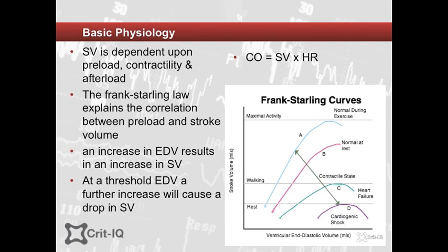This graph shows how an increase in end-diastolic volume results in an increase in stroke volume. However, this is only true to a point. At a threshold end-diastolic volume, an increase will cause a drop in stroke volume as the cardiac myofibrils become overstretched. Patients on the rise of the curve are underfilled and should respond with a disproportionately large increase in stroke volume following a small increase in end-diastolic volume by way of a fluid bolus.